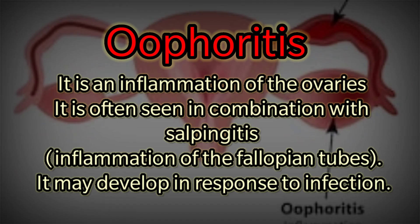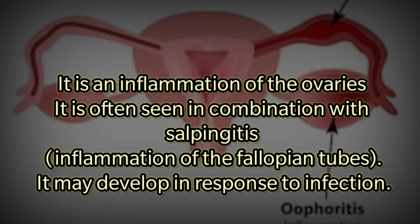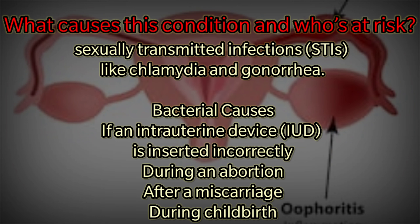Oophoritis is an inflammation of the ovaries. It is often seen in combination with salpingitis, that is inflammation of the fallopian tubes. It may develop in response to infection.